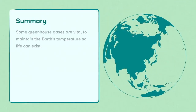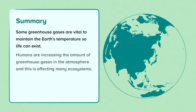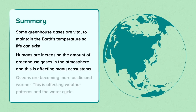To summarise, some greenhouse gases are vital to maintain the Earth's temperature so life can exist. Humans are increasing the amount of greenhouse gases in the atmosphere, and this is affecting many ecosystems. Oceans are becoming more acidic and warmer. This is affecting weather patterns and the water cycle.